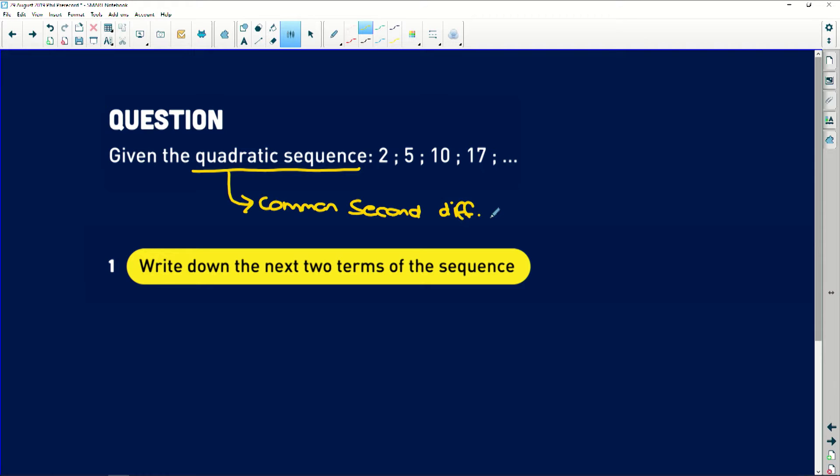Remember what that means is if you find the first difference between these terms, we're going to have 3 as a difference between 5 and 2, 5 as a difference between 10 and 5, and 7 as a difference between 17 and 10.